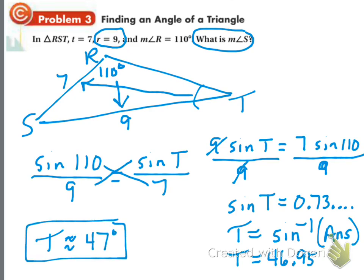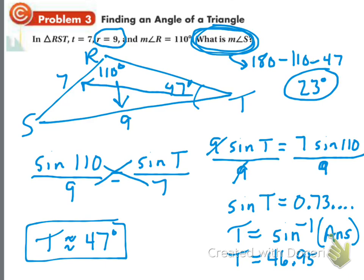Now here's the thing: we're not done because the problem says what's the measure of angle S. So this is about 47 degrees, so angle S is 180 minus 110 minus 47. If I'm not mistaken, that comes out to 23 degrees, and that is your answer. So we had to do the law of sines to get the other angle and then use our 180 rule to find what they were looking for. Sorry for the car alarm.